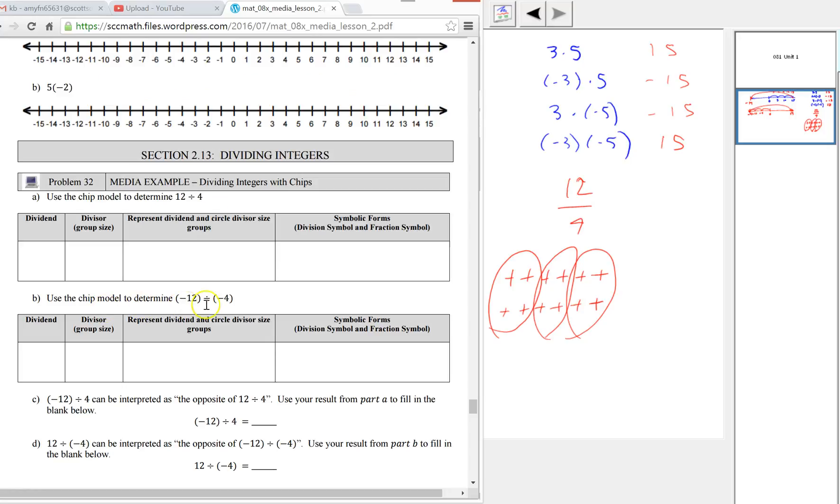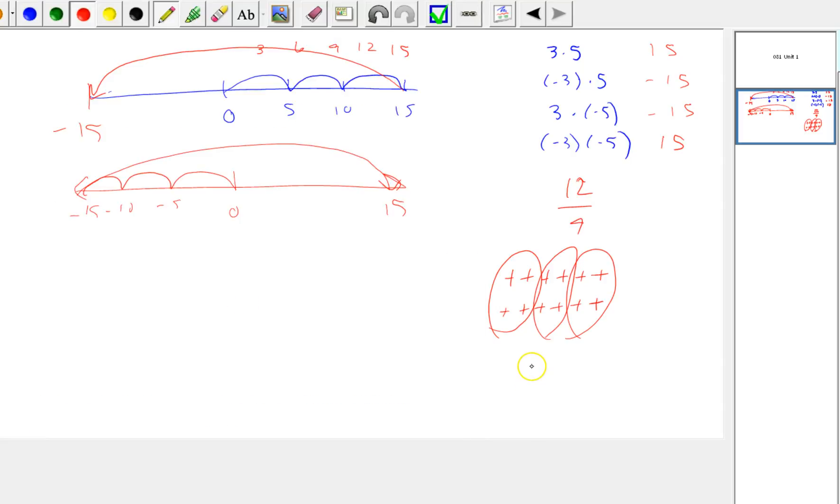The next one we have them do is negative 12 divided by negative 4. Notice the symmetry here. 1, 2, 3, 4, 5, 6. Here's our 12 negative chips. We want groups of size negative 4. There's 3 such groups. Getting them to see this connection will show them the similarities between these.